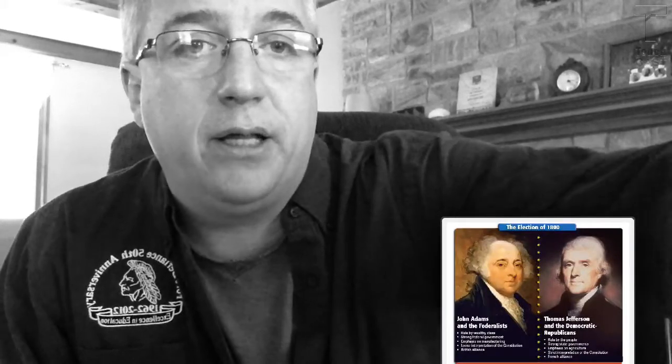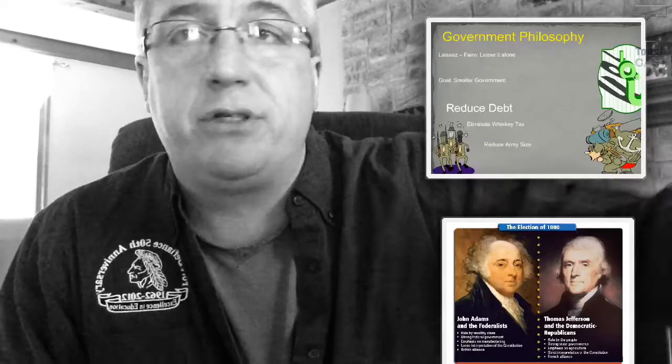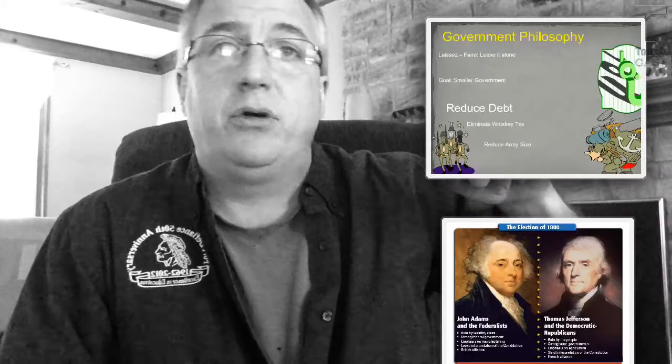Unit 4 Supplemental Lecture 1: a quick review of Jefferson and Manifest Destiny. We're going to move quick here. I want to look at Jefferson and the election of 1800 and Jefferson's political beliefs.